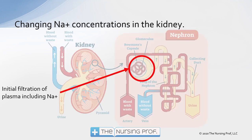In the glomerulus, initial filtration of plasma occurs, including sodium. Unfortunately, sodium follows a lot of those waste products out, so we lose a lot of sodium there. Since water follows sodium, a lot of water has also been filtered out through the glomerulus, and we need to reabsorb some of that water — we can't just be dumping all that water out.